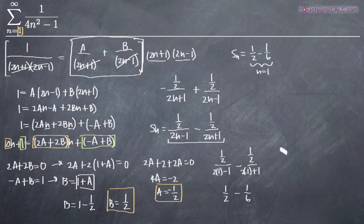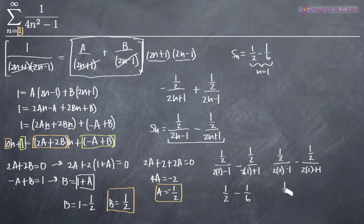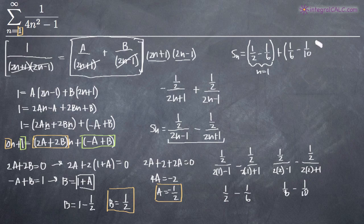Plugging in n equals 2: we get 1 half divided by (2 times 2 minus 1) minus 1 half over (2 times 2 plus 1). The first fraction gives 1 half over 3, which is 1 sixth. The second fraction gives 1 half over 5, which is 1 tenth. So the second term is 1 sixth minus 1 tenth.